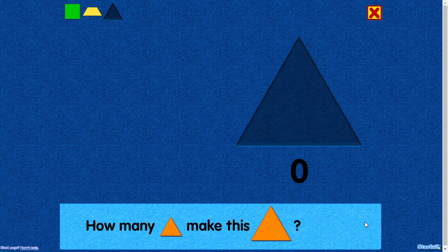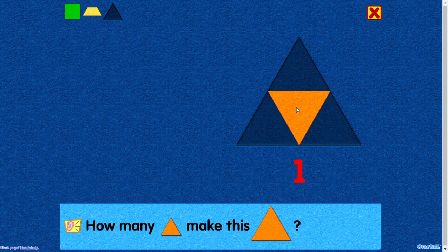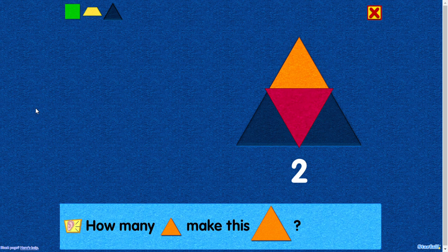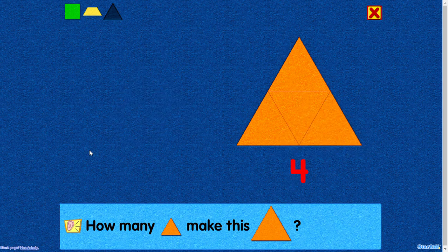How many triangles make this triangle? One. Two. Nice! You placed this triangle above the center triangle. Three. Nice! You placed this triangle beside the center triangle. Four. Nice! You placed this triangle beside the center triangle.